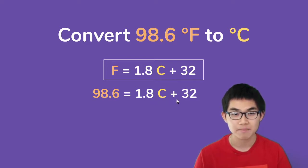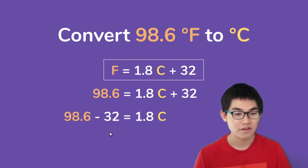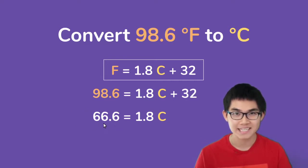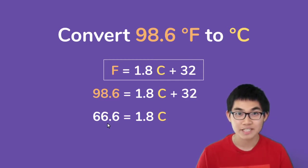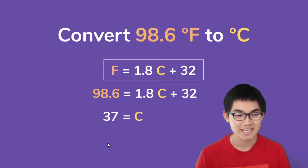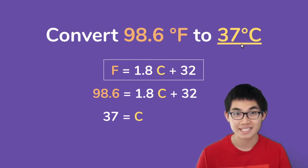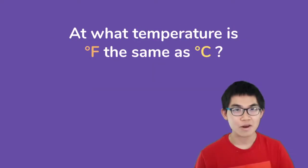The next step is to isolate the variable C on one side of the equation. To do that, we need to subtract both sides by 32. So 32 minus 32 is zero — these two cancel out. On the left side it is 98.6 minus 32, which is 66.6. The last step is dividing both sides by 1.8, and 66.6 divided by 1.8 gives us 37.